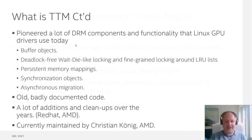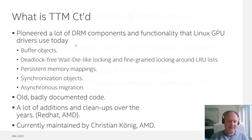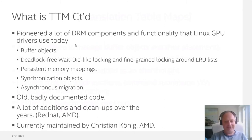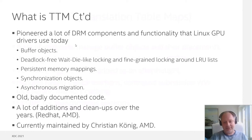The wait-die locking was then abstracted out to the WW mutexes we have in the kernel today. We had persistent memory mappings, which meant you can evict a buffer object while user space still holds what it thinks is a persistent CPU mapping. And synchronization objects that later became DMA fences, and also asynchronous migration.